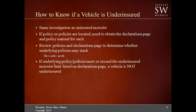For an underinsured vehicle, you're going to conduct most of the same searches to determine if there is underlying coverage. You want to look at the policy of the owner or constructive owners and the policy for the driver of the vehicle to determine if there is any coverage for any of these individuals. You want to look at the policies and declaration pages to determine whether the underlying policies would stack or whether they are considered to be separate. Obtain the declaration page and policy for each coverage that may be underlying your underinsured policy.